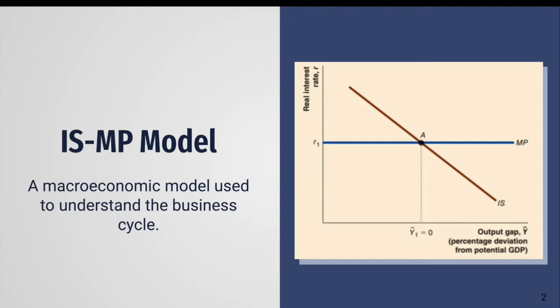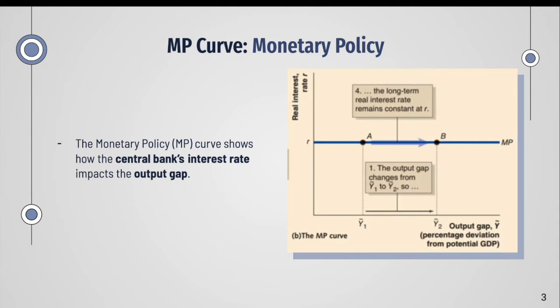The MP curve represents the central bank's monetary policy. In other words, the curve shows how the central bank's interest rate impacts the output gap, as can be seen on the graph, where it is a horizontal line with the output gap on the x-axis and the real interest rate on the y-axis.